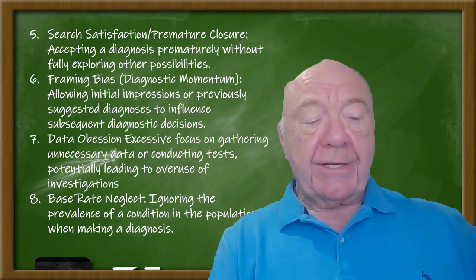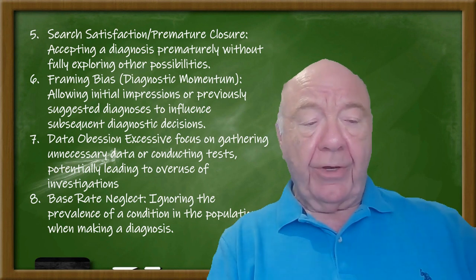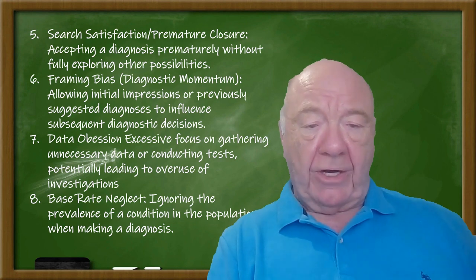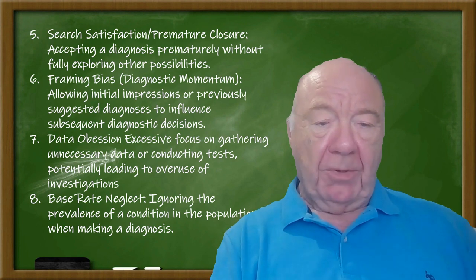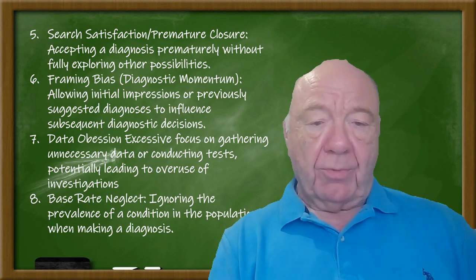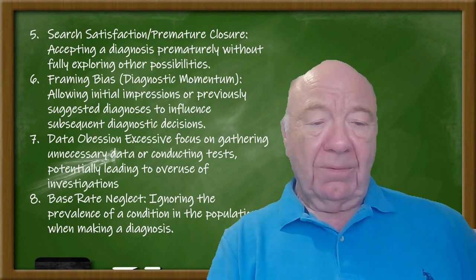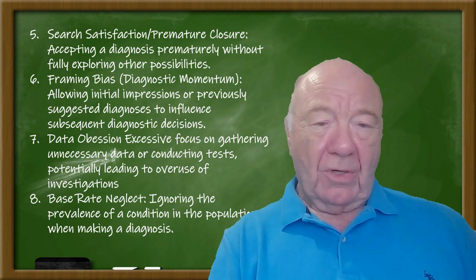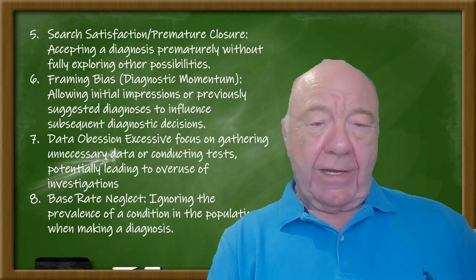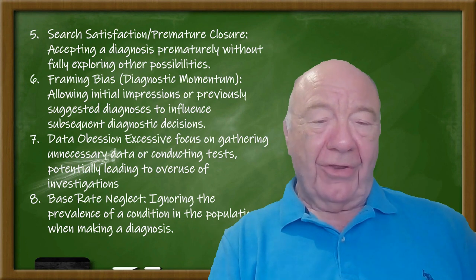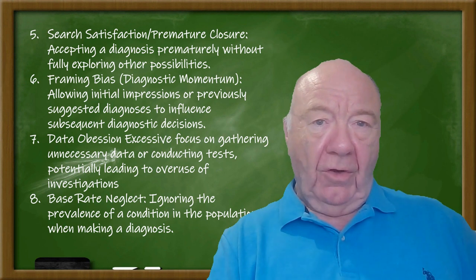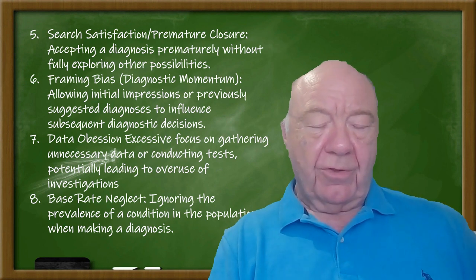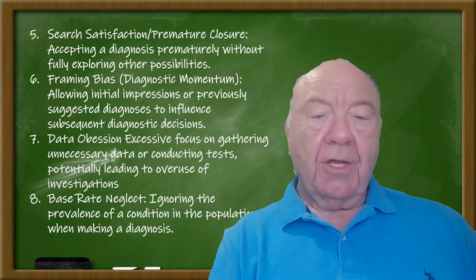For base rate neglect: ignoring the base rate isn't terrible, because base rates can bias you with prior probabilities. If you do look at base rates, look at them after you've made the diagnosis — not beforehand — and make sure that if you're coming up with a rare diagnosis, you check the incidence and prevalence of that condition.